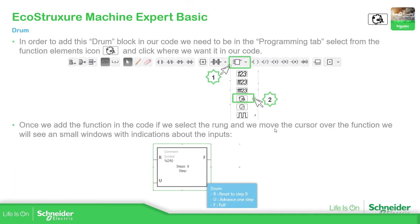In order to add the drum into your project, you just need to go to the function block list and select the drum icon. Then click on the function block and place it on the rung in the part you want.